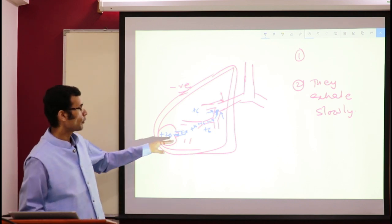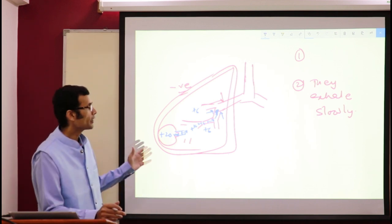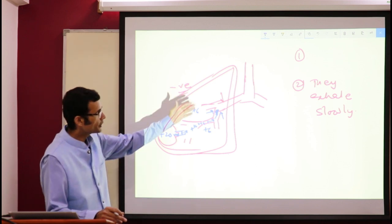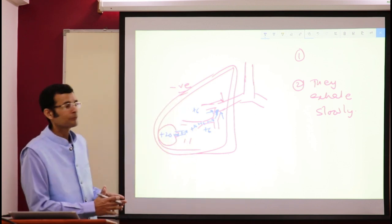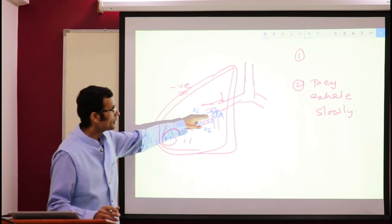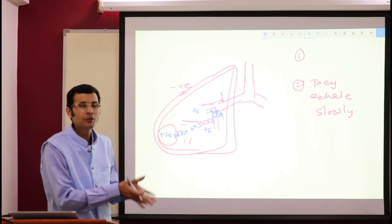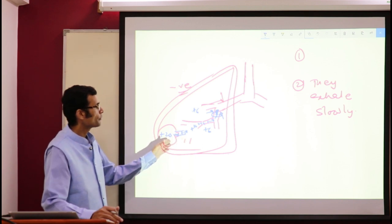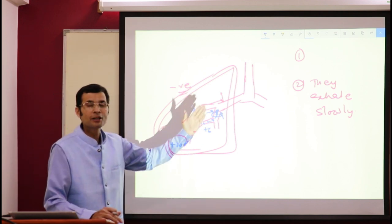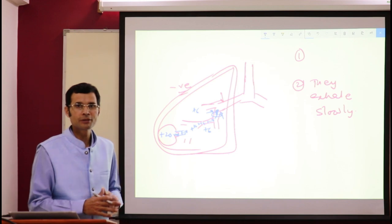By exhaling slowly, the equal pressure point shifts upward, back toward the cartilaginous airways — the trachea and first seven generations. In COPD, the equal pressure point had shifted to the lower non-cartilaginous airways. By exhaling slowly, they attempt to shift the equal pressure point back toward the cartilaginous airways, where cartilage provides tethering and prevents compression. That is the concept of equal pressure point.